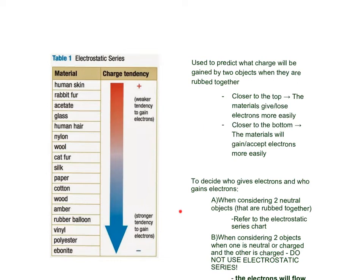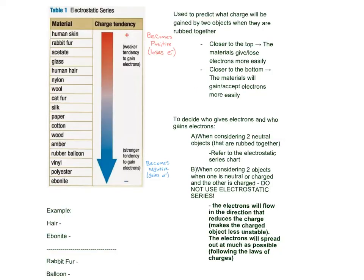If we're gaining electrons, that means the bottom is usually negative and the top is usually positive. What I've done is just write down that these down here become negative because they gain electrons and these up here become positive because they lose an electron. That electron goes to the object that's below it.